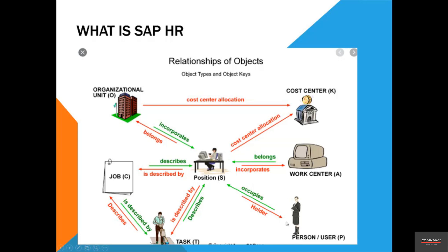A position is occupied by a holder — a person. Importantly, a position can be held by multiple persons. For example, three people might share a marketing position, collectively working 100% but split as 20% for A, 40% for B, and 40% for C. So a position can be assigned to multiple persons, have multiple tasks, and multiple jobs — it can be as complex as you can imagine.